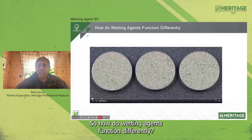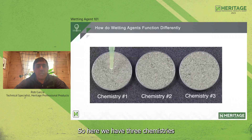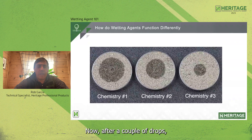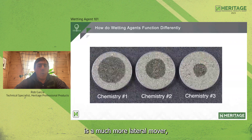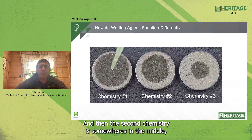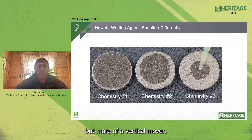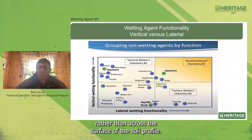How do wetting agents function differently? Dropping three different chemistries onto a sand sample, after a couple of drops you see that one chemistry is a much more lateral mover — water spreading out across the soil surface — a second chemistry is somewhere in the middle, while the third is more of a vertical mover, with water moving down through the soil profile rather than across the surface.